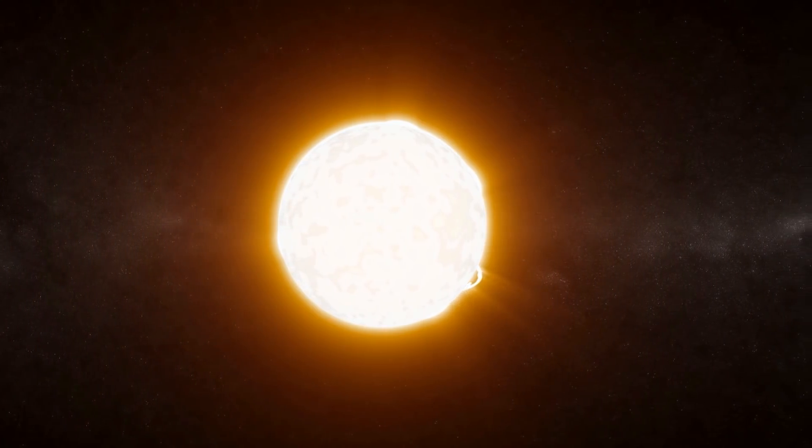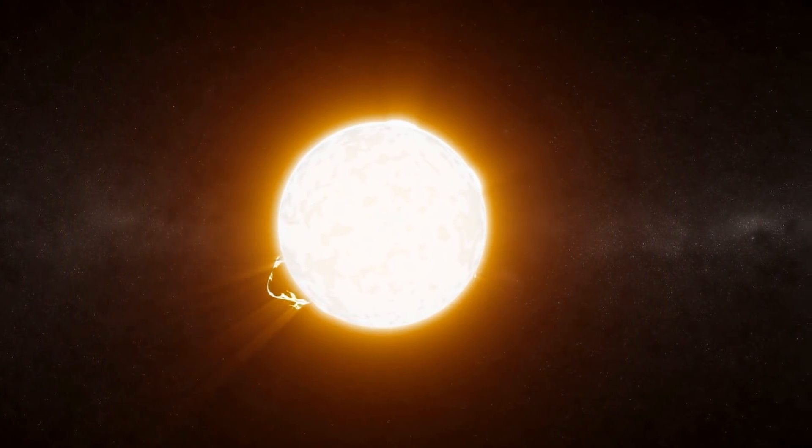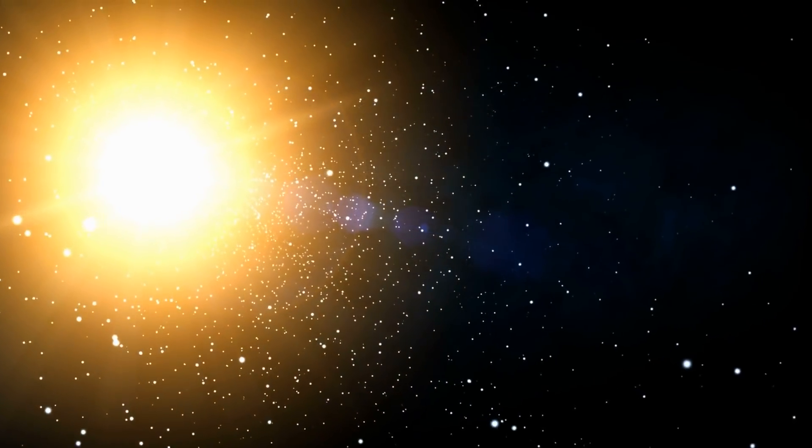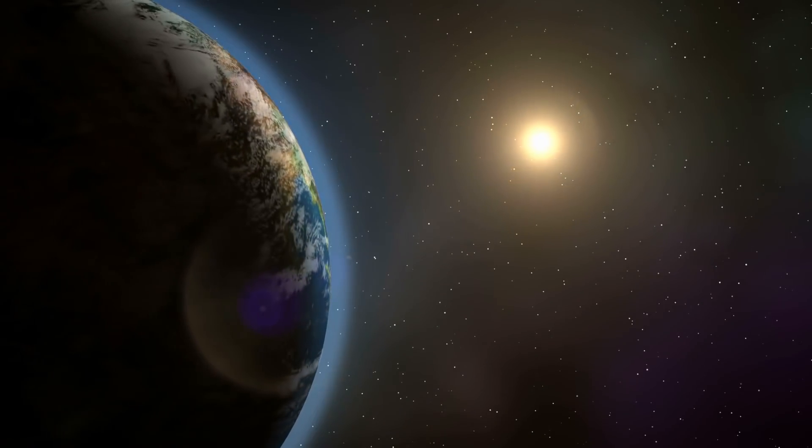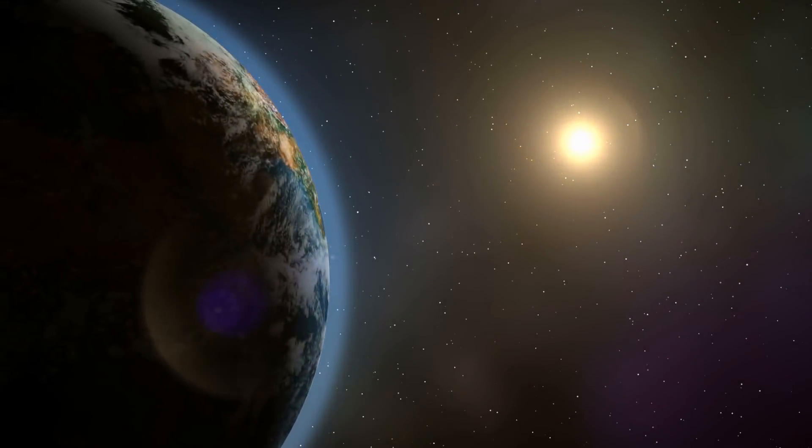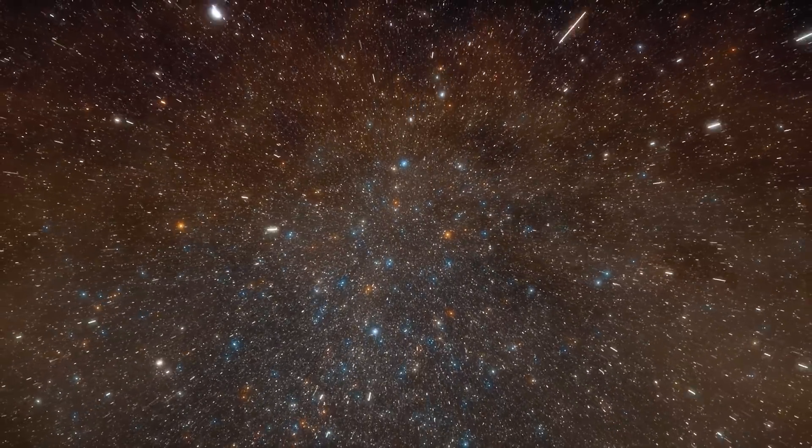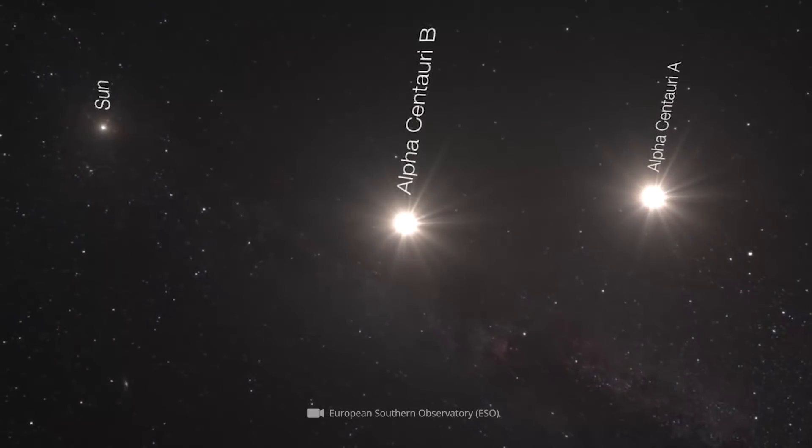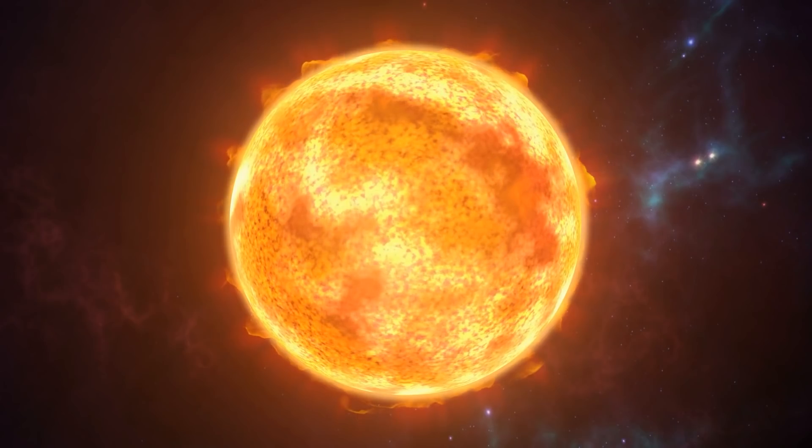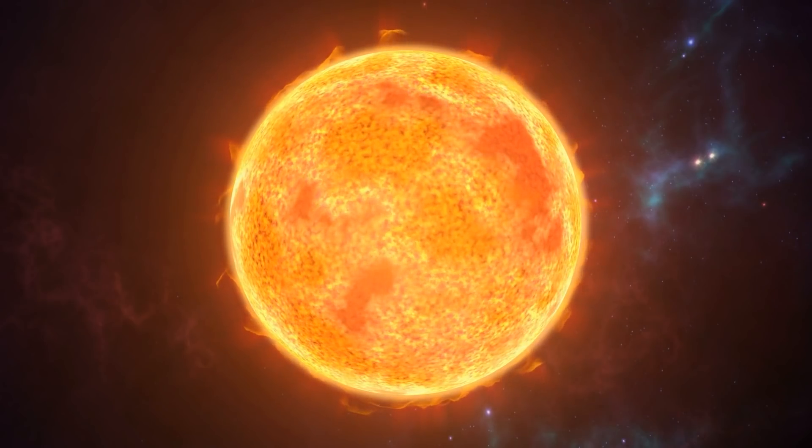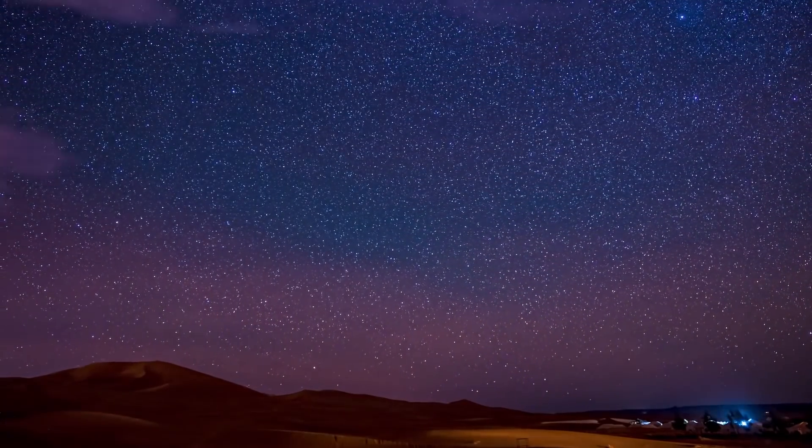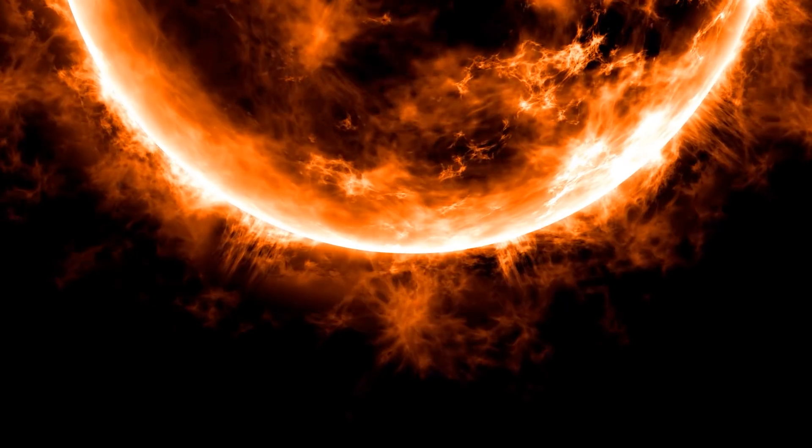Just like our sun, Alpha Centauri A is a yellow dwarf of the spectral type G2-5. Since the celestial body also has some other similarities with our host star, it's often referred to as the closest solar twin to Earth. For example, Alpha Centauri A has a diameter equal to 1.22 times the diameter of the sun. The mass of the star is given at 1.1 solar masses. At the same time, it emits about 1.52 times more radiation than our native parent star.